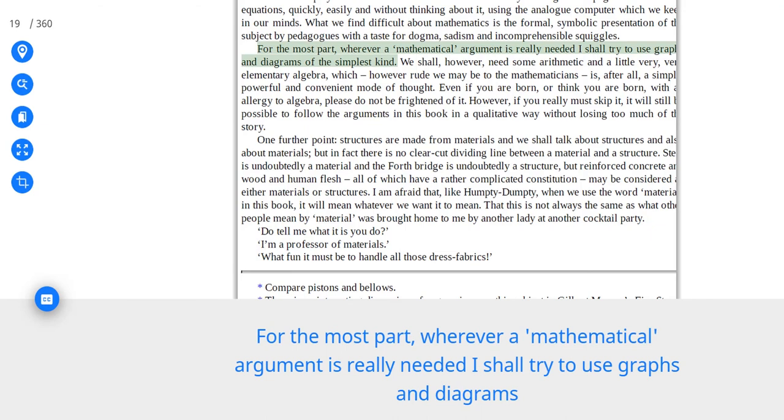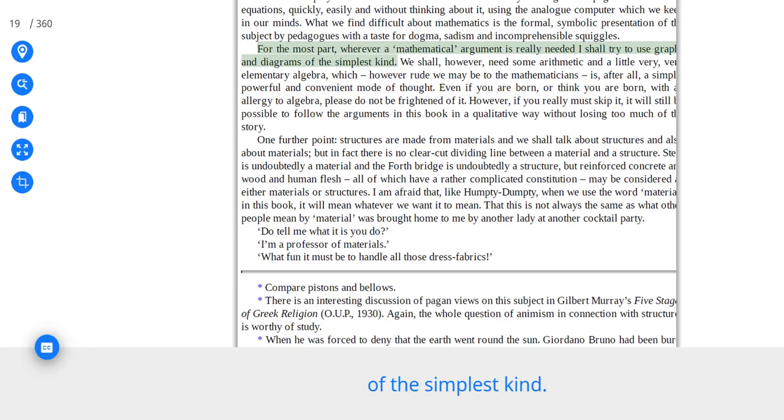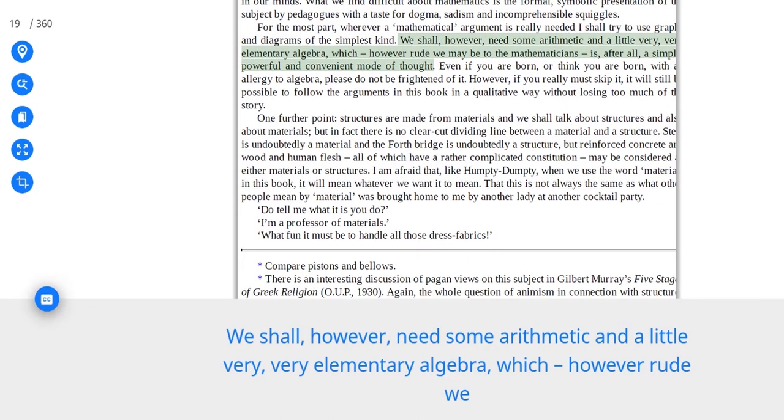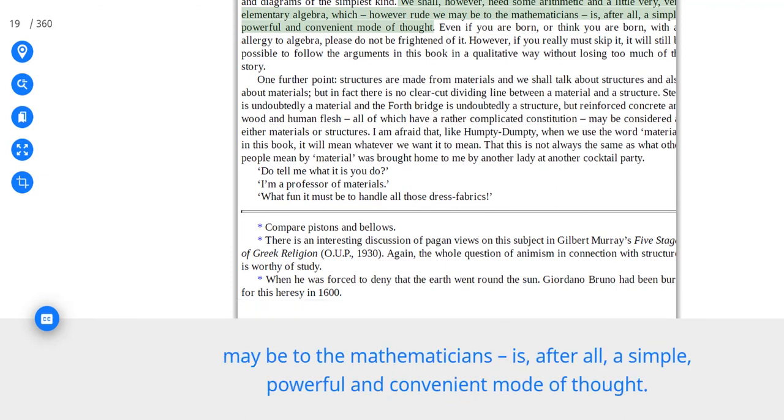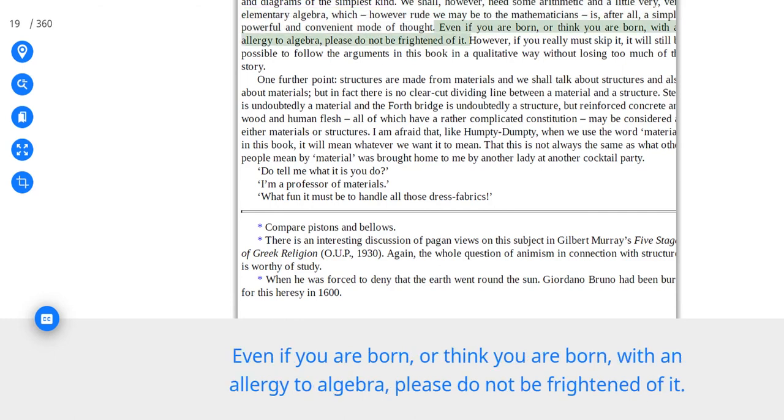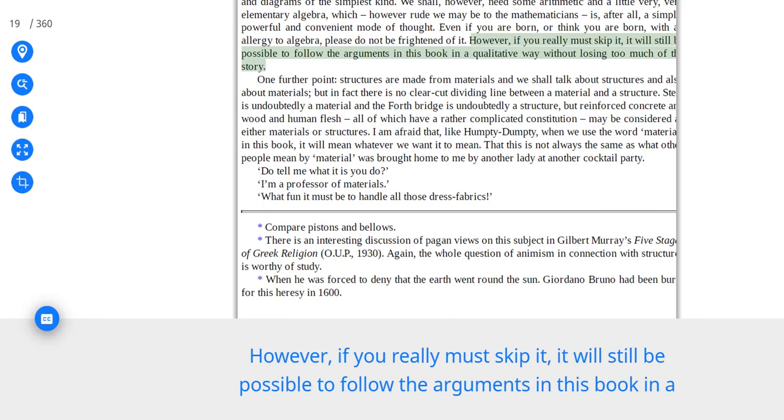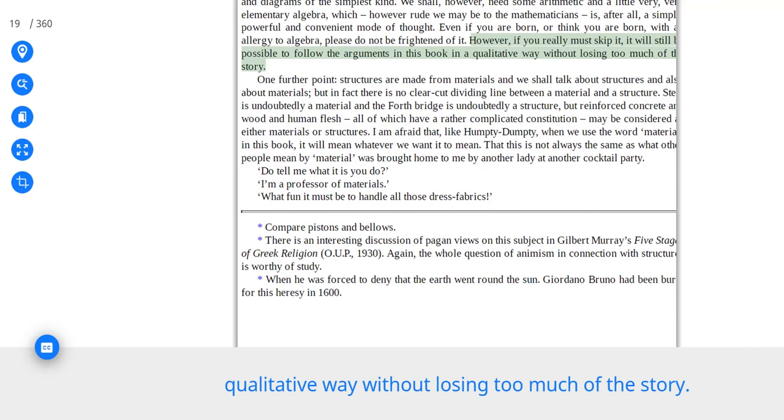For the most part, wherever a mathematical argument is really needed I shall try to use graphs and diagrams of the simplest kind. We shall, however, need some arithmetic and a little very, very elementary algebra, which, however rude we may be to the mathematicians, is after all a simple, powerful and convenient mode of thought. Even if you are born, or think you are born, with an allergy to algebra, please do not be frightened of it. However, if you really must skip it, it will still be possible to follow the arguments in this book in a qualitative way without losing too much of the story.